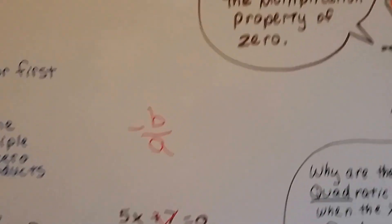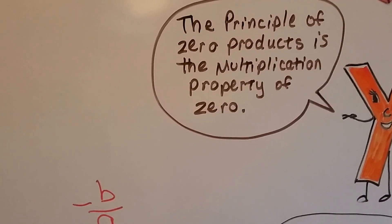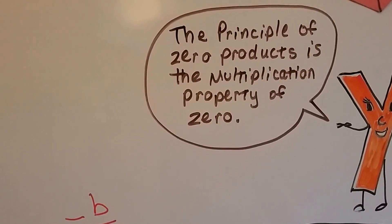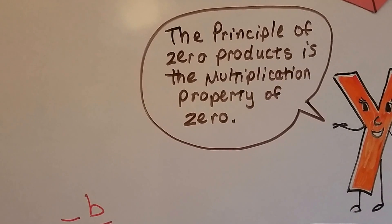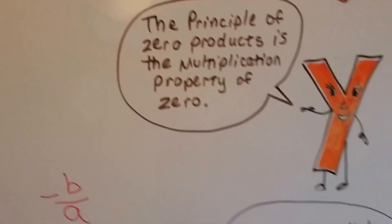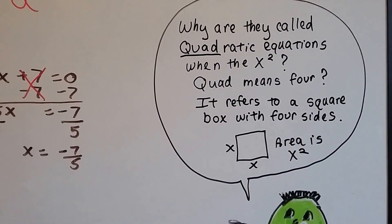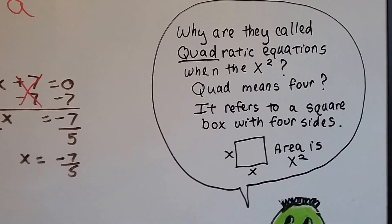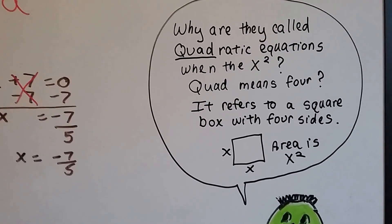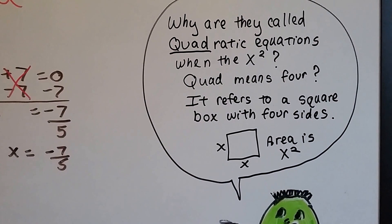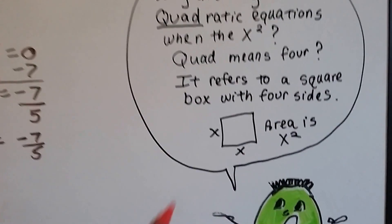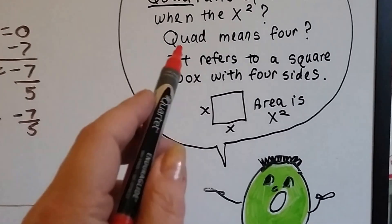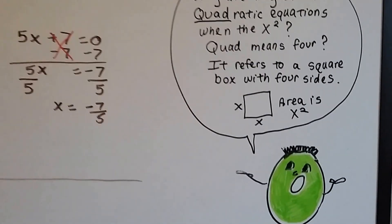That principle of zero products is the multiplication property of zero. You might hear a teacher call it MPZ. For the multiplication property of zero, it's the same thing as the principle of zero products. And I have a question for you. Why are they calling these quadratic equations when the x has an exponent of 2? Quad means 4. Well, it refers to the square box with four sides. The area inside is x times x, or x squared. And there's four sides to this box, so it's a quad. That's how it happened.